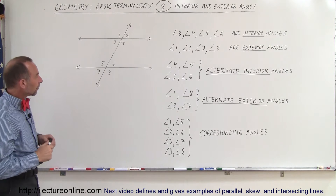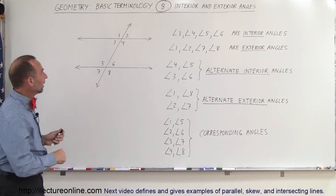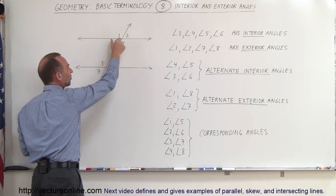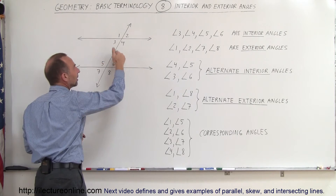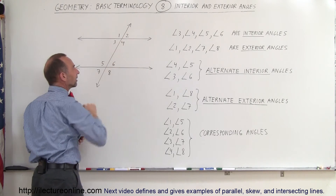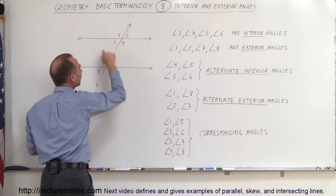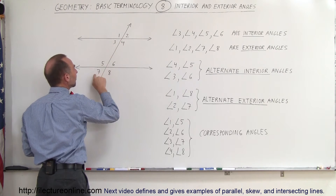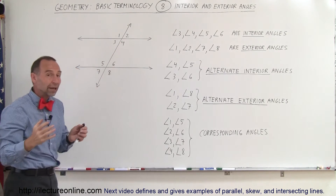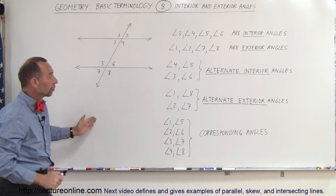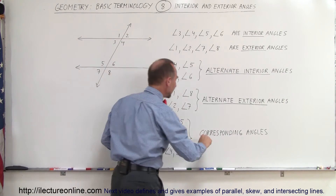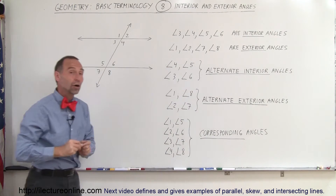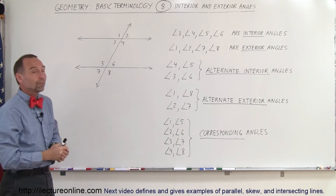And finally, notice that angle 1 and angle 5 look like they're the same. Again, if these lines are parallel, then they will be exactly the same. So angle 1 and 5, angle 2 and 6, angle 3 and 7, and angle 4 and 8 — those are four pairs. Those four pairs of angles are called corresponding angles. They correspond to one another, and therefore they're called corresponding angles.